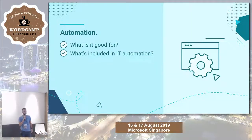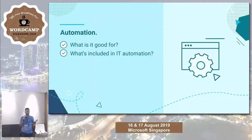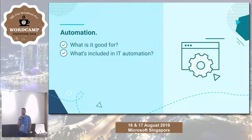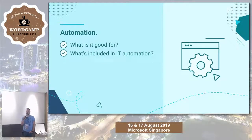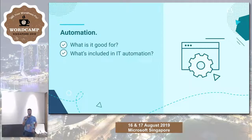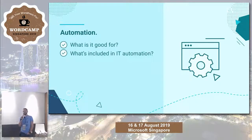Let's start with automation. By automation I mean the use of software to create repeatable instructions that reduce human interaction with IT systems. This is good because we save a lot of time and decrease errors from manually executing commands again and again. From my experience, automation is very useful for server provisioning, application deployment, configuration management, and continuous delivery.